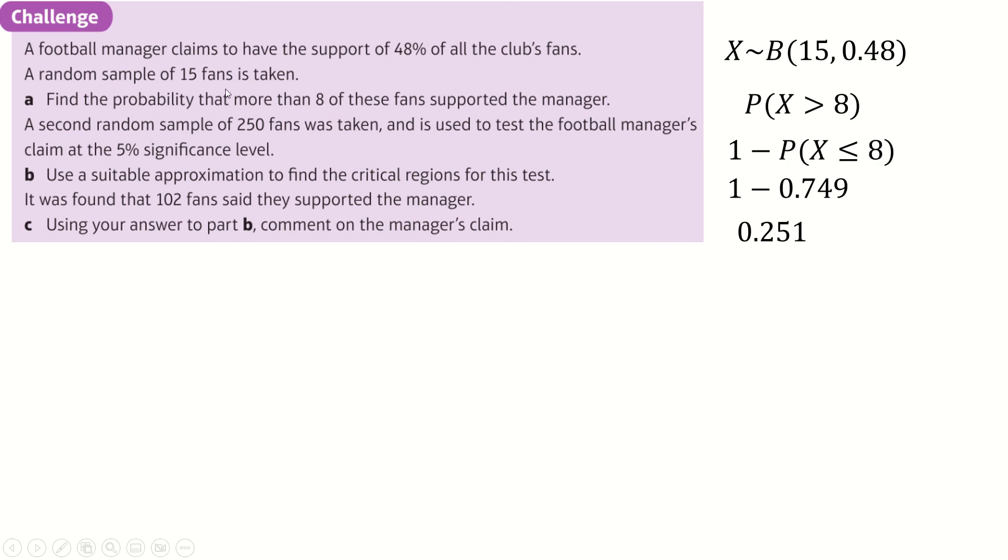Sample of 250. So 250 is a large number, 5% significant. So if 250 is large and the probability is about 0.5, that means you can do a normal estimation, which would be NP into NP times 1 minus P. NP is 250 times 0.48 and then times by 0.52 to get to this.